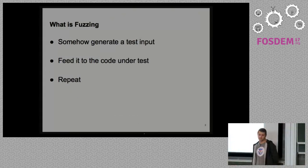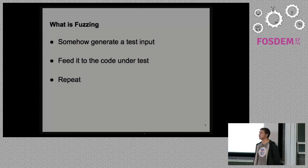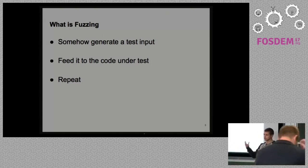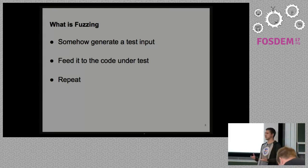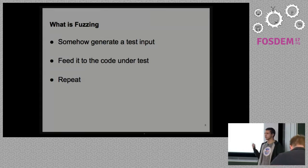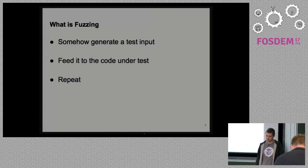Let's start. Fuzzing, or fuzz testing as it is also called, is basically a pretty simple routine. You just generate some data, you use this data as input to your target, you monitor your target for unexpected actions like crashes, some inconsistency, some security bugs. And you just repeat this process until you find some bugs or unexpected stuff.